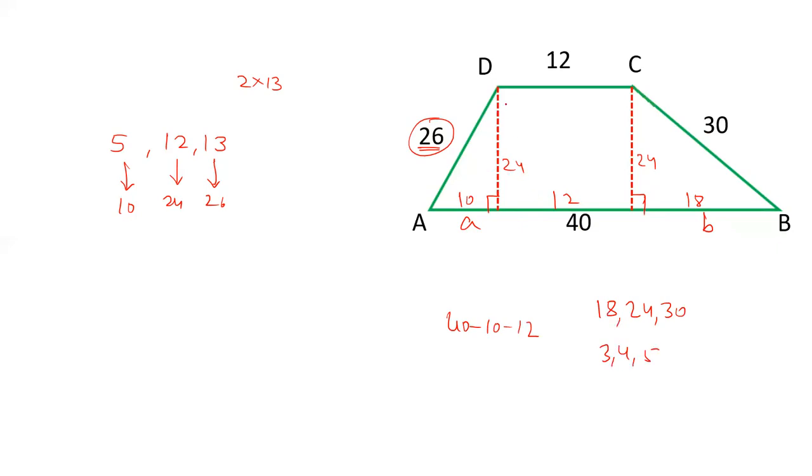By observation we can say that the height is 24 and directly you can get the area. Area of trapezium is 1 by 2, B1 plus B2 into H. 1 by 2, B1, B2 is 12 plus 40, height is 24. So 1 by 2, 12 plus 40 is 52. When we cancel out this we get 26 into 24. The product of it is 624 centimeter square, whichever is the unit.